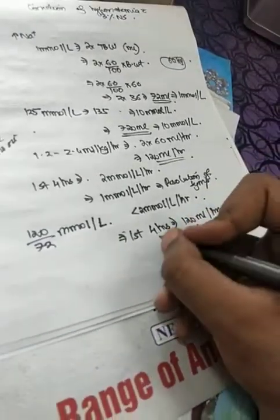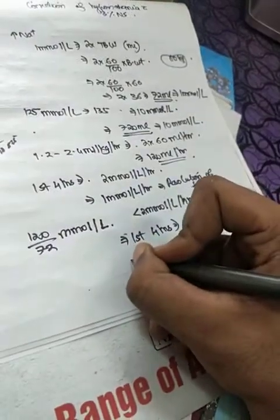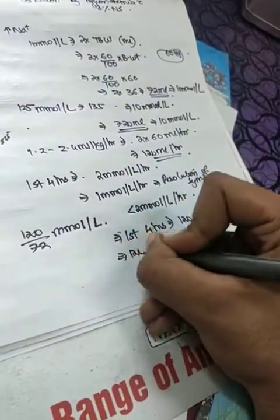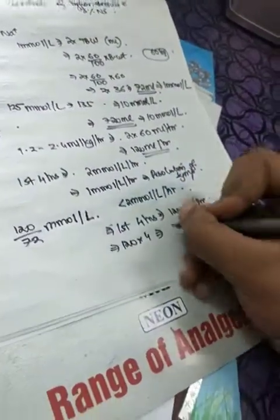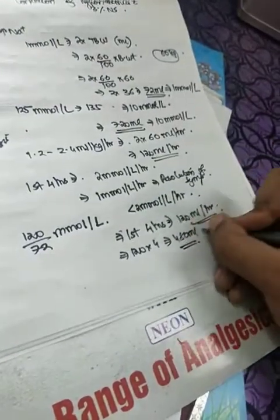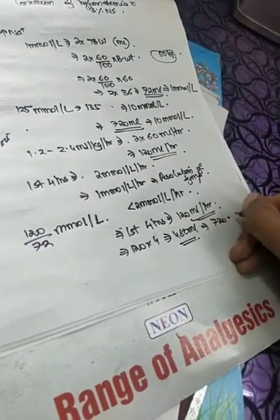So for the first four hours, if it is 120 ml per hour, total infusion in the first four hours will be 120 into 4, that is 480 ml.